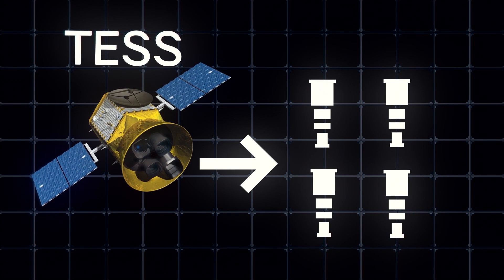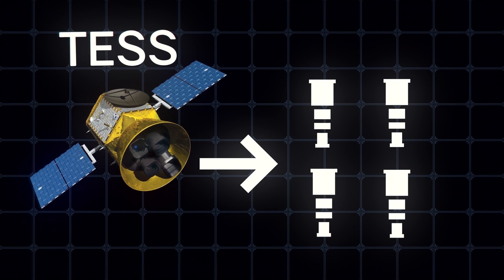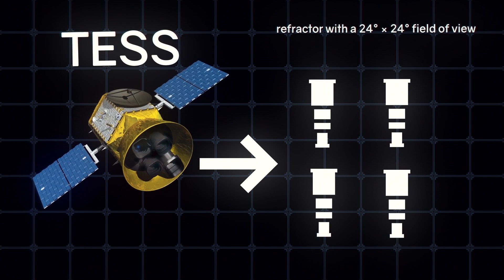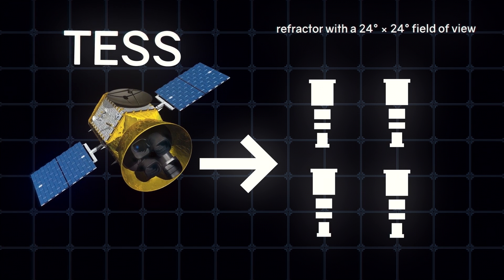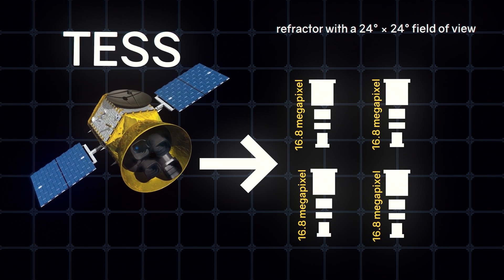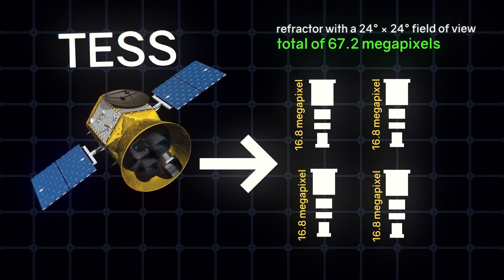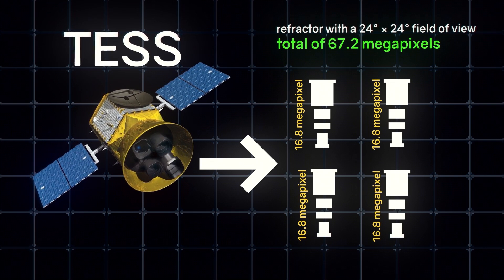For this coverage, the TESS telescope consists of four telescopes, each of which is a wide-angle refractor with a 24 by 24 degree field of view, equipped with a 16.8 megapixel camera, for a total of 67.2 megapixels for all cameras.